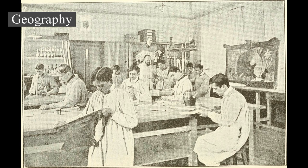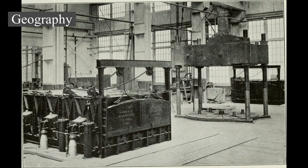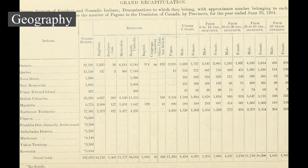Much of northern Canada is covered by ice and permafrost. The future of the permafrost is uncertain because the Arctic has been warming at three times the global average as a result of climate change in Canada. Canada's annual average temperature over land has warmed by 1.7°C (3.1°F), with changes ranging from 1.1 to 2.3°C in various regions since 1948. The rate of warming has been higher across the north and in the prairies. In the southern regions, air pollution from both Canada and the United States, caused by metal smelting, burning coal to power utilities, and vehicle emissions, has resulted in acid rain which has severely impacted waterways, forest growth, and agricultural productivity in Canada.